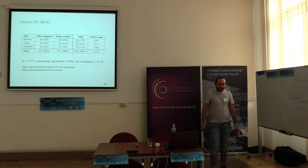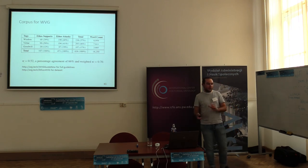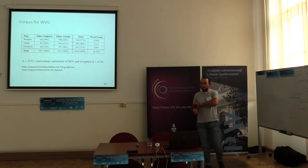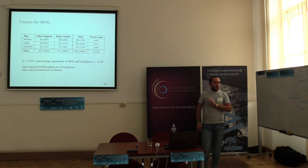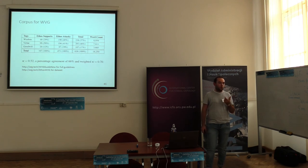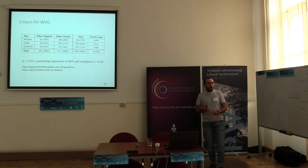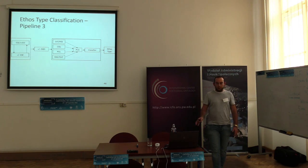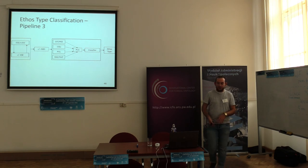We did an annotation study on this using a 10% subset of the data, and we had a kappa score of 0.52 — reasonable results but not great. However, when you look at the weighted kappa score of 0.7, it tells us that some of the categories of ethos types are possibly polynomial within a sentence — it could be that someone refers to both virtue and wisdom at the same time. The last step, which I'll be presenting at COMMA, is to automatically classify each of these ethos types, in the same sense as we can do with argumentation schemes.